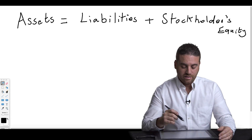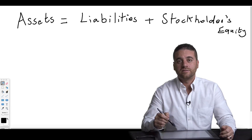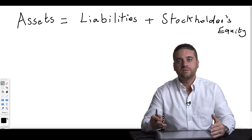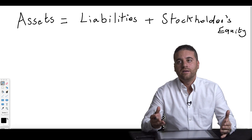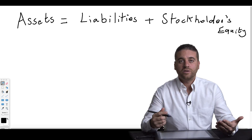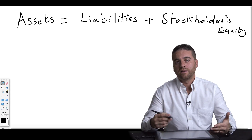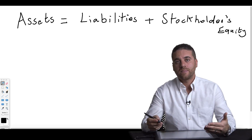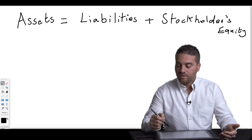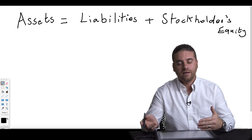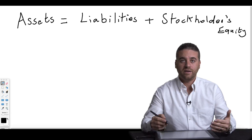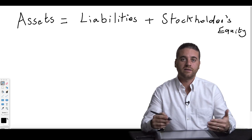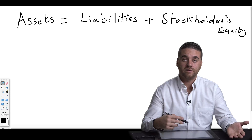The other side of the equation is liabilities and stockholders' equity. Liabilities are the creditors' or lenders' claim against the assets — in other words, what we owe to lenders or creditors. Stockholders' equity is the owners' claims against the assets. So if you add what stockholders can claim plus what lenders can claim against the assets, that equals the total assets.